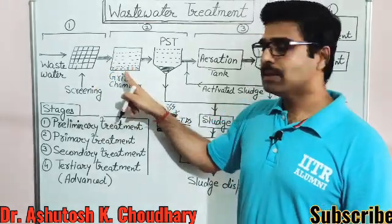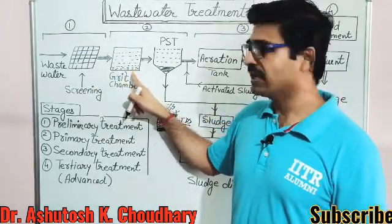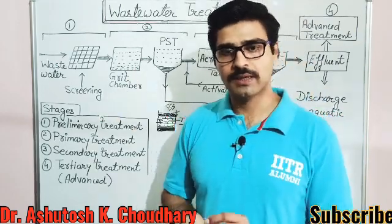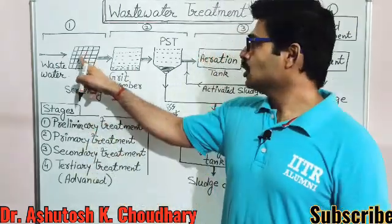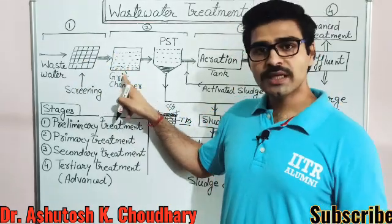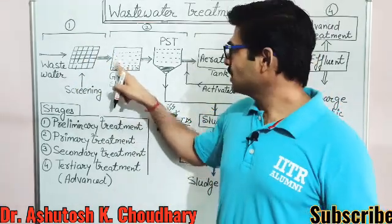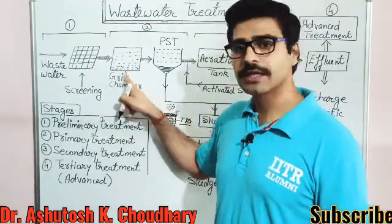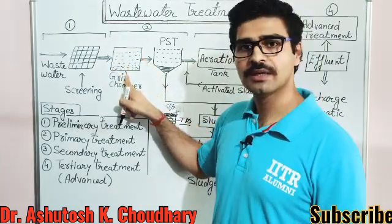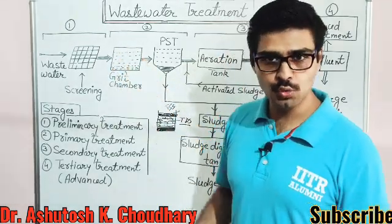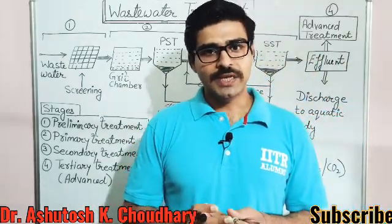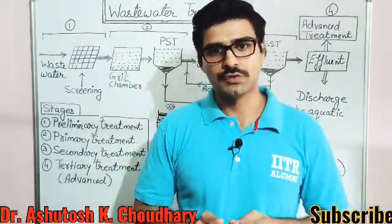After the bar screen, some fine particles that are heavy — for example sand and mud particles — will pass through the screen but, being heavy, will settle under the influence of gravity. This chamber is known as the grit chamber. The grit chamber is used for the removal of mud and sand particles from the wastewater.